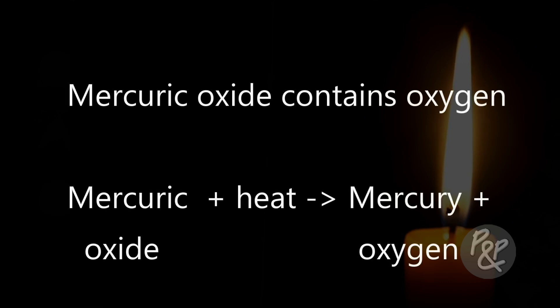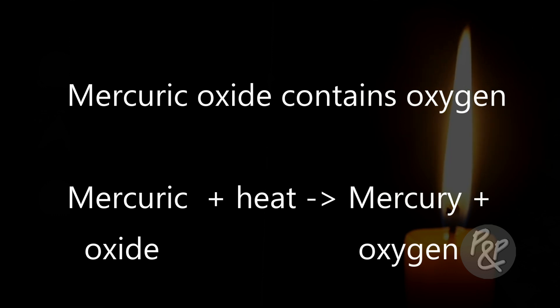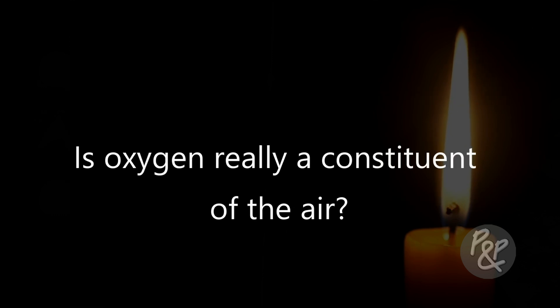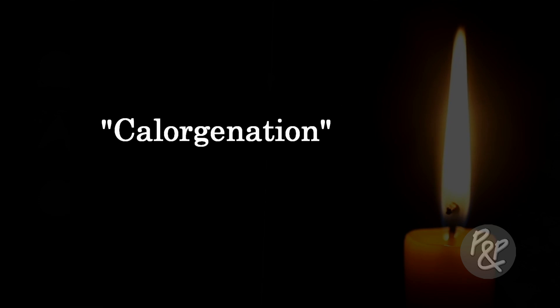It's clear from the demonstration that mercuric oxide contains oxygen, and when heated it releases that oxygen. But how did the oxygen get there to begin with, and where did it actually come from? Is oxygen really a constituent of the air? To answer these questions we must first understand the process of callogenation, and what better way to do this than to look at the work of Antoine Lavoisier.